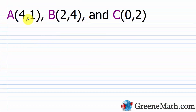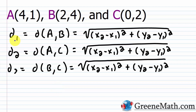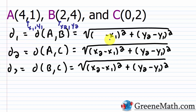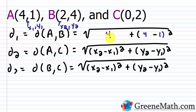Let's look at one more problem. We have A(4, 1), B(2, 4), and C(0, 2). I'll find the distance between each pair. For the distance between A and B: x₂ = 2, x₁ = 4, so 2 − 4 = −2, squared is 4. Then 4 − 1 = 3, squared is 9. So 4 + 9 = 13, giving the square root of 13.